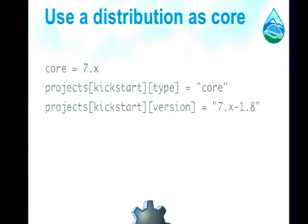There's also the ability to use a distribution as a core version. Previously, you'd specify the core version and Drush Make would grab it as a separate process, then build your distribution. The change was introduced by Damian for Commerce Kickstart — in the previous approach, if you had core patches necessary for your distribution, Drush Make wouldn't grab those. By specifying a distribution as your version of core, you no longer have to redundantly specify those core patches.